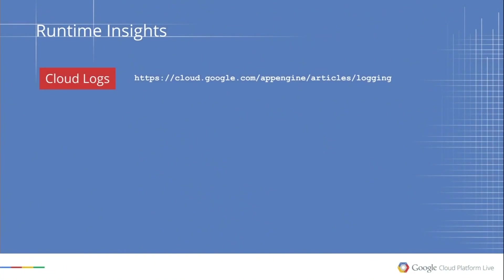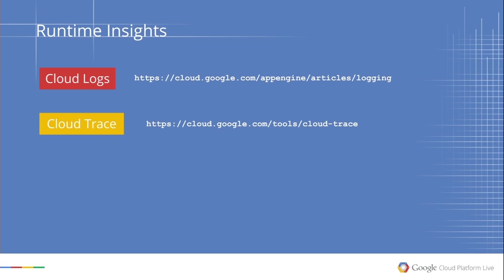To wrap up: we showed you how to eliminate errors in your production system with Cloud Logs, how to debug latency issues with Cloud Trace — generate reports and compare two versions of your code to see if you've eliminated the performance problem — and with Cloud Debugger, where you can capture requests, look at the stack trace, evaluate the execution, let the request go, and keep doing that until you've narrowed down where your problem is.